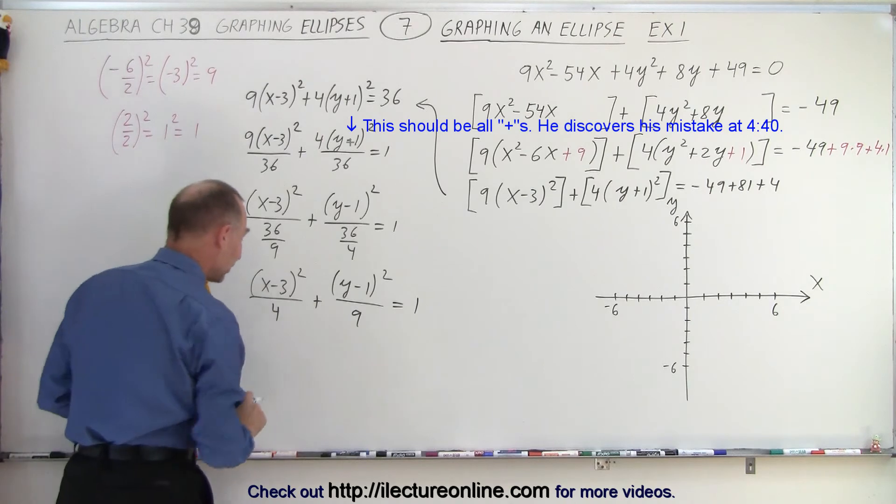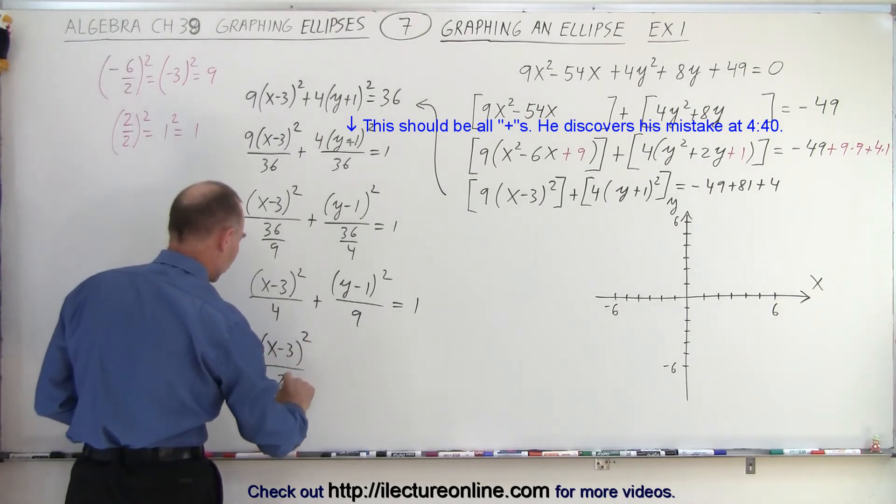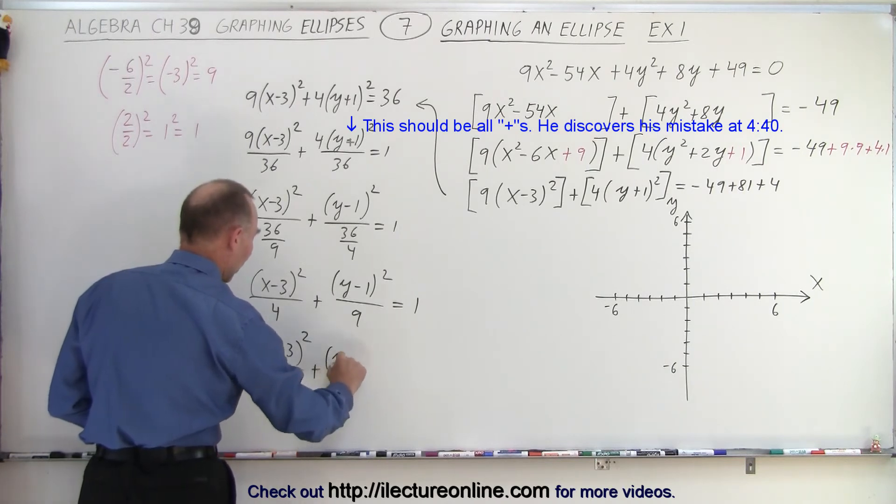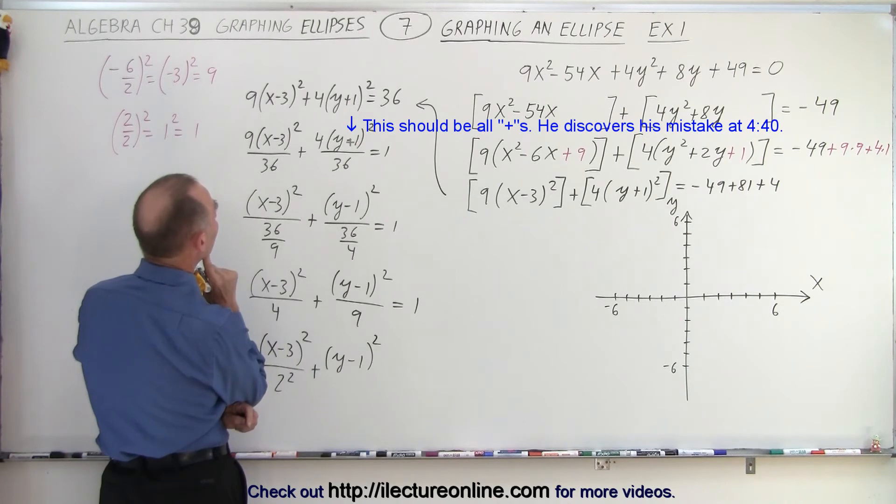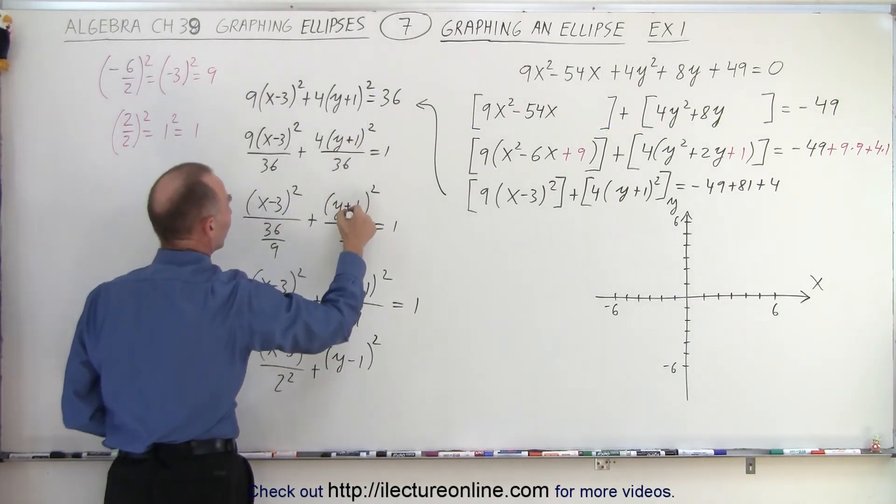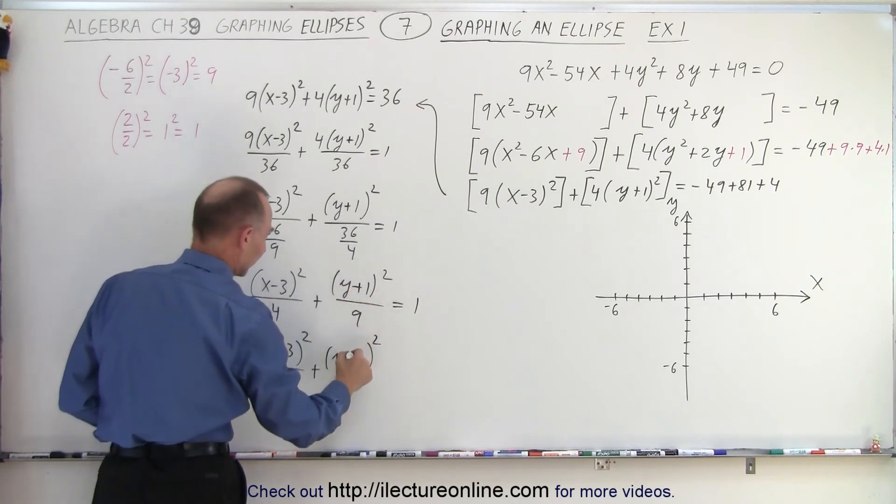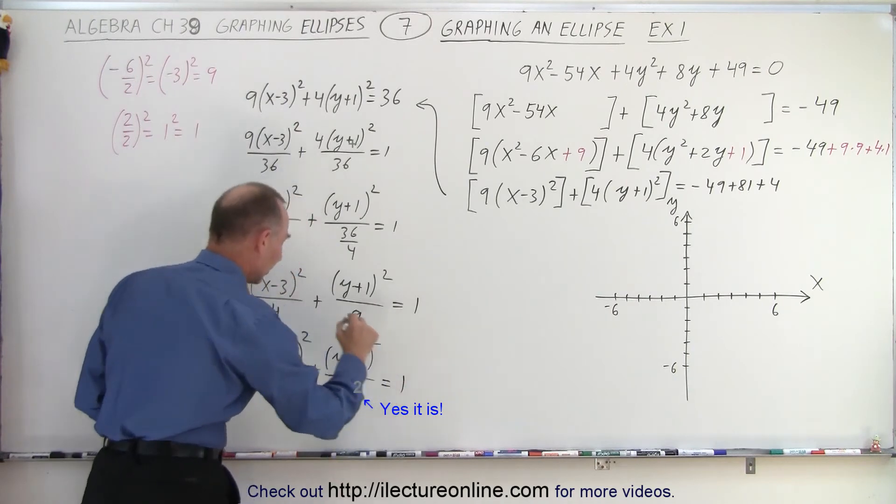This can be written as x minus 3 squared divided by 2 squared plus y minus 1 squared. Oh wait a minute, I went from plus to minus. That's terrible. This should be a plus. Gotta be very careful. In algebra, it's easy to make mistakes. There we go. And that's equal to 1.